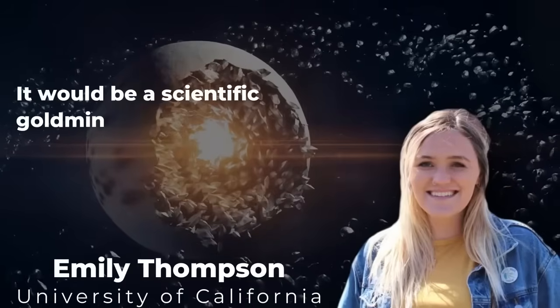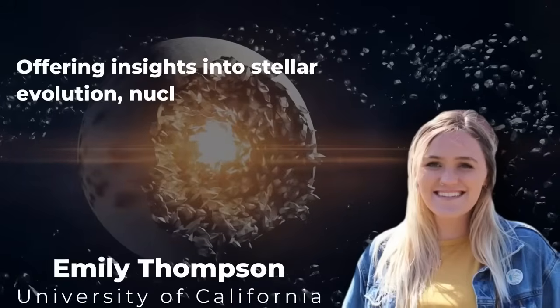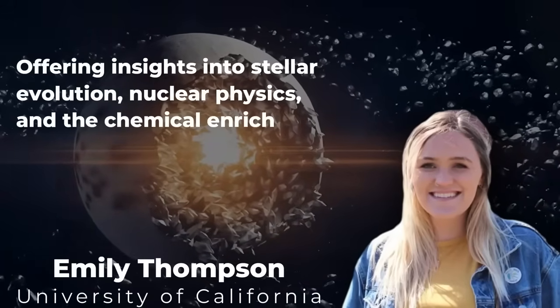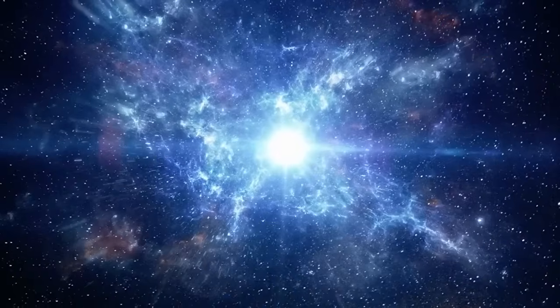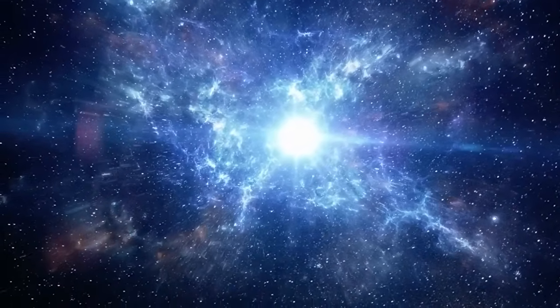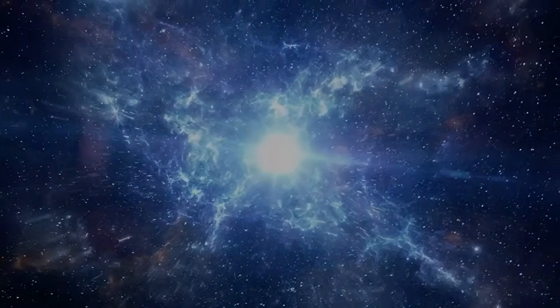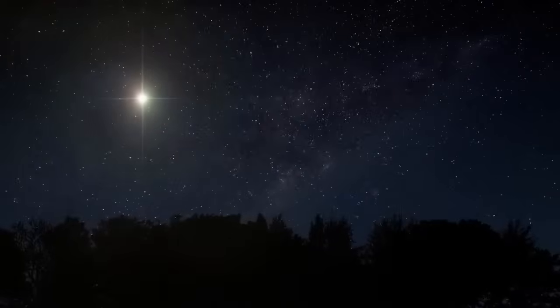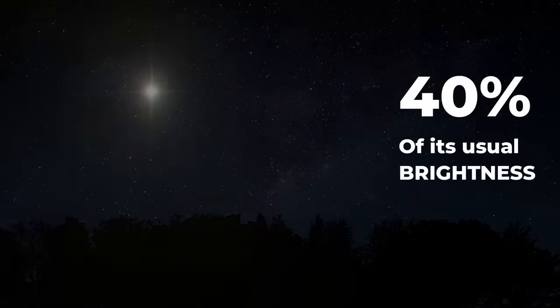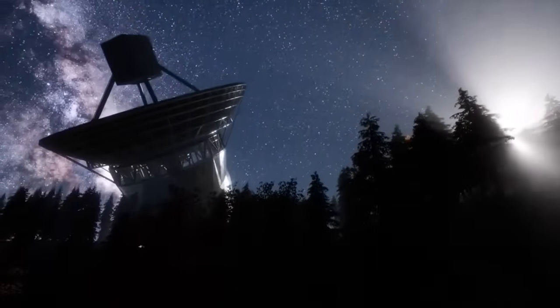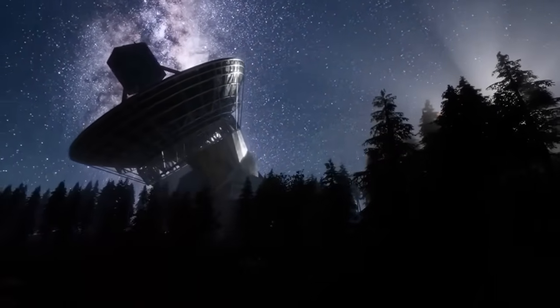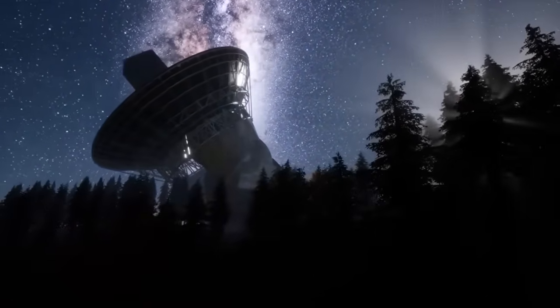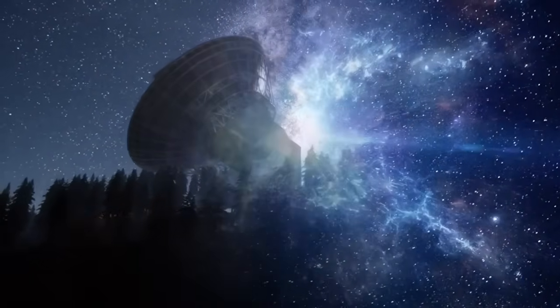It would be a scientific goldmine offering insights into stellar evolution, nuclear physics, and the chemical enrichment of the universe. However, the story of Betelgeuse took an unexpected turn in late 2019 when the star suddenly began to dim instead of continuing its dramatic brightening. This dimming was so significant that it was noticeable even to the naked eye, with Betelgeuse fading to about 40% of its usual brightness. The astronomical community was puzzled by this sudden change and scrambled to observe the star more closely, hoping to unravel the cause behind its fading light.